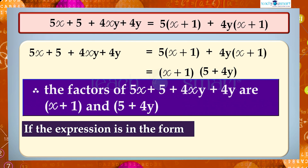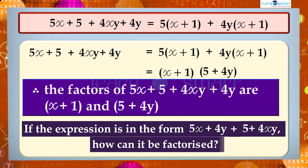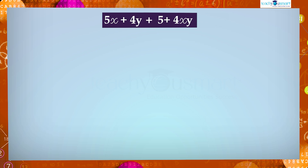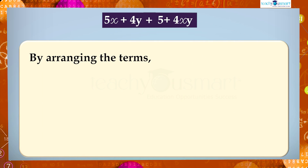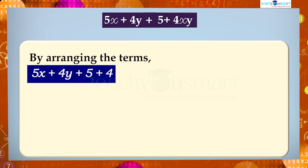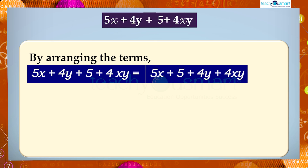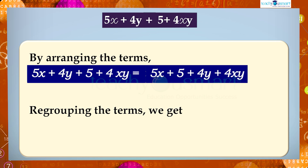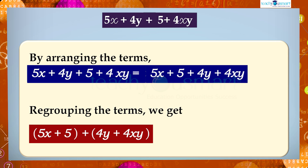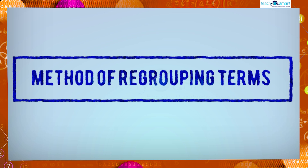But if we get the given expression in the form 5x + 4y + 5 + 4xy, then how can it be factorized? As we can see, there is no common factor for the first two terms and the next two terms. But we can factorize this by arranging the terms as 5x + 5 + 4y + 4xy, then again regrouping the terms we get (5x + 5) + (4y + 4xy).